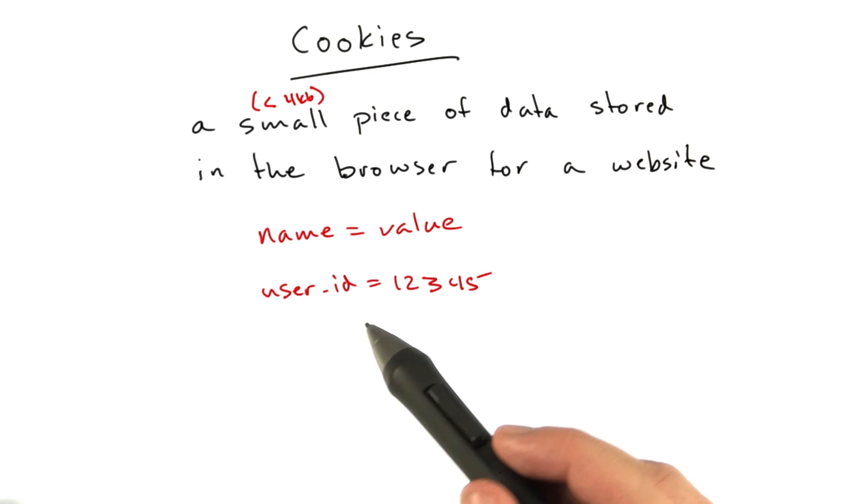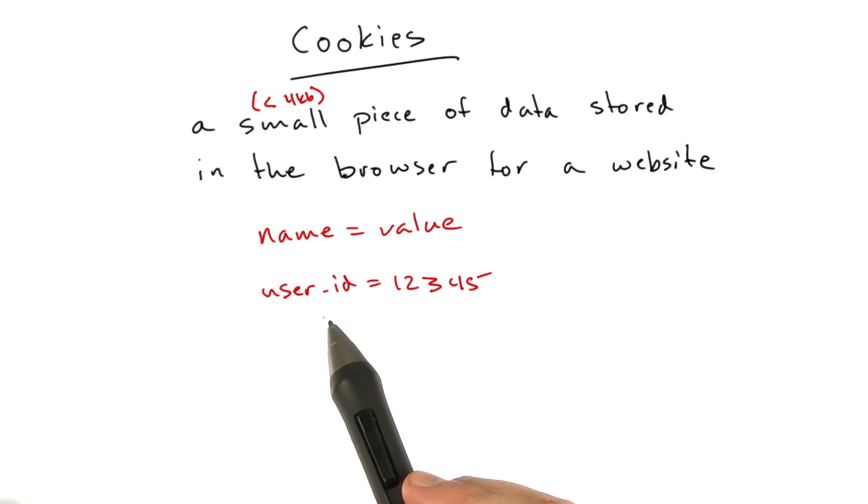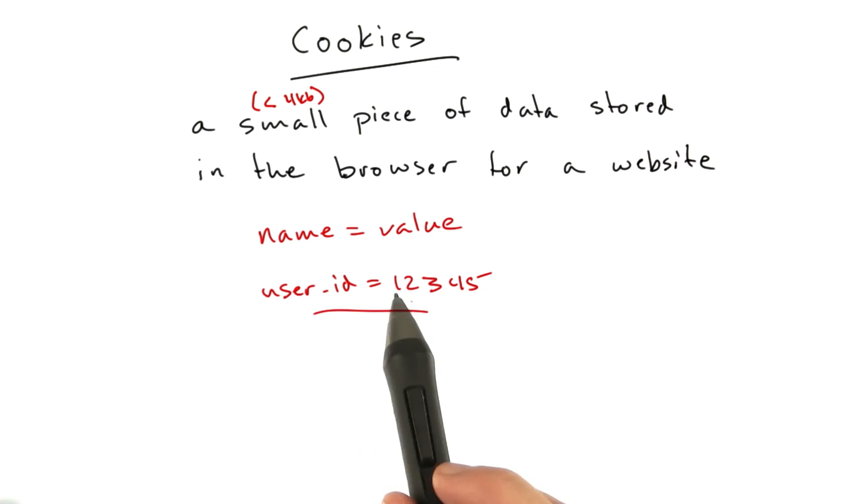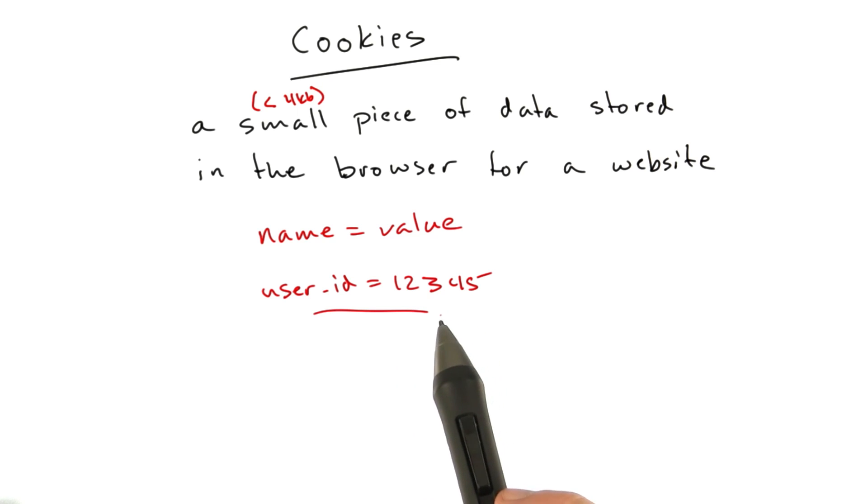Cookies are really commonly used for things like user IDs and kind of temporary information that a browser wants to store, whether you're logged into a website. Generally, you have a cookie that represents the fact that you're logged in as user 12345.